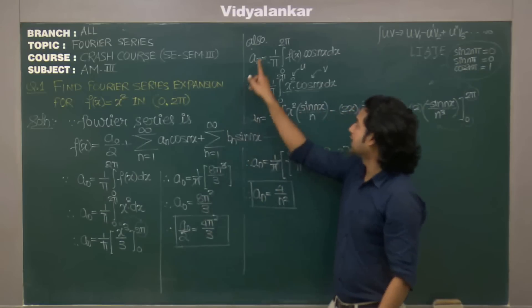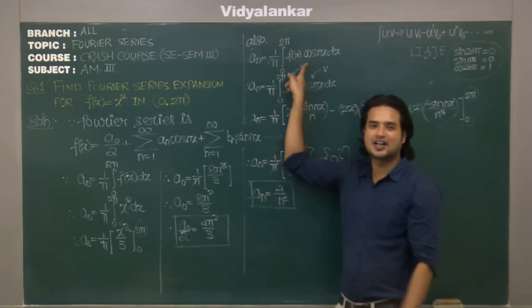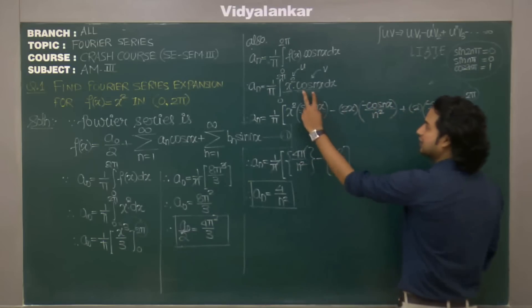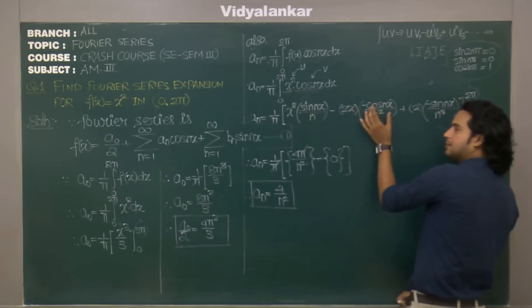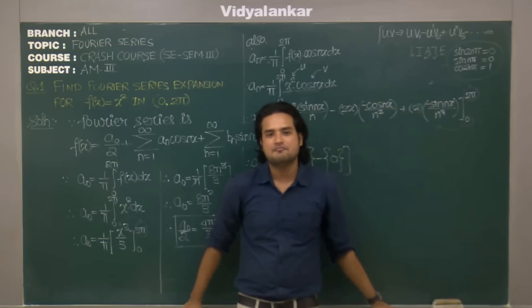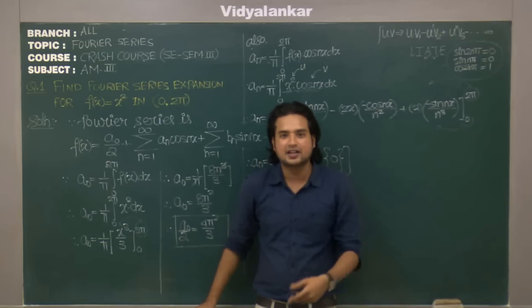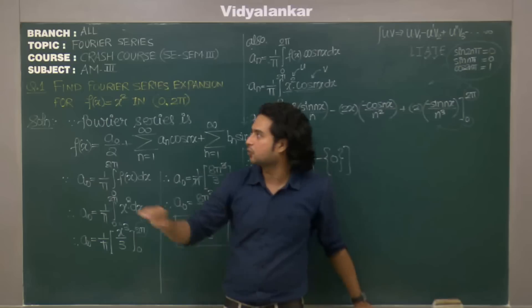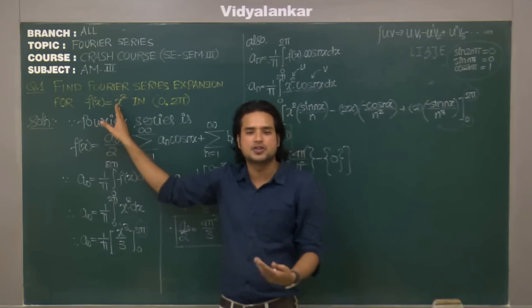So this is how we get in exam questions based on Fourier series. As I mentioned, what are the things they can manipulate with? Function: instead of x² they can give you π - x and so on, which is something we will obviously be solving in crash course and LMS batches. Intervals: 0 to π, instead of 0 to 2π, or 0 to 2l.